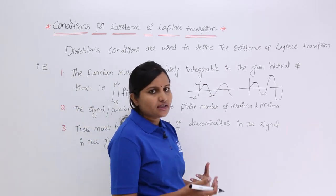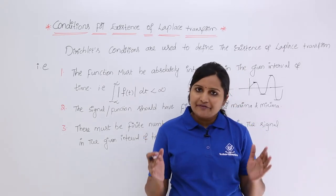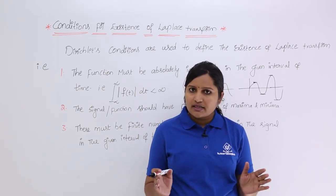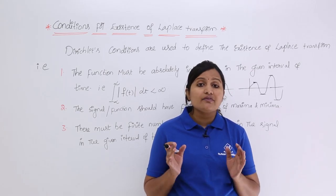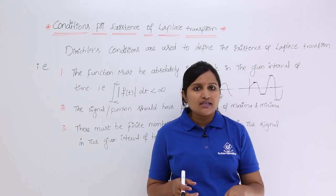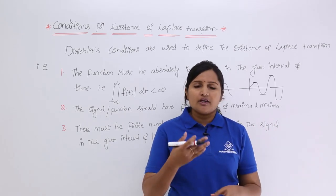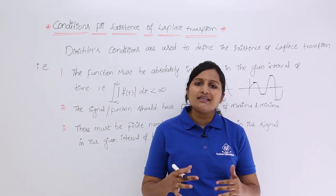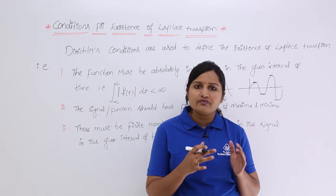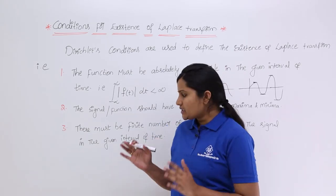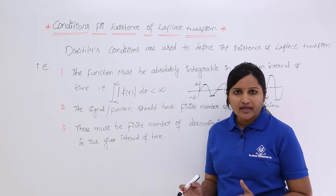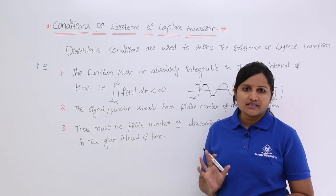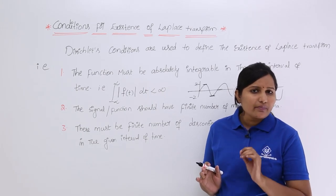The third condition is that there must be a finite number of discontinuities in the signal in the given interval of time. If your signal has infinite discontinuities — meaning it is discontinuing an infinite number of times — you are going to lose information and cannot represent the exact spectrum or frequency domain of the signal using Laplace transform. Therefore, in the given interval of time, your signal can only have a finite number of discontinuities.